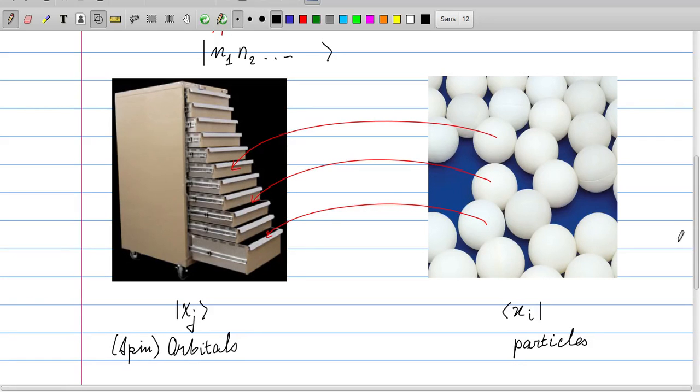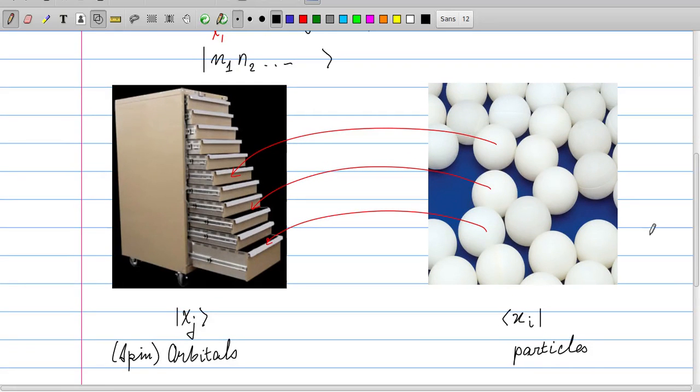Always be aware, have this picture in mind when you see this so-called Fock space notation. When you see n1, n2, it just means I take the states, these are the drawers, I count the number of particles in each drawer, so I count the number of balls, and that is my n1, n2, etc.